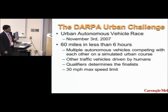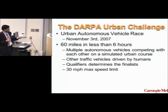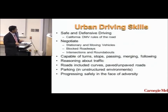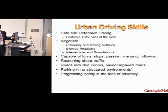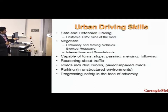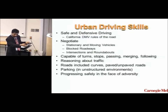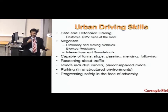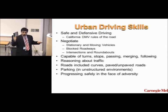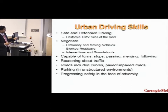Now let me talk about autonomous vehicles. In 2007, DARPA held the Urban Challenge, where an autonomous vehicle should drive 60 miles in less than 6 hours, with multiple autonomous vehicles competing with each other on a semi-urban course, alongside vehicles driven by humans. The vehicles were judged as if driven by a human — they had to satisfy California DMV rules. They had to negotiate stationary obstacles, moving obstacles, and blocked roadways — a road clear five minutes earlier could be blocked the next time around, requiring an alternate plan. All in real time with no human intervention.